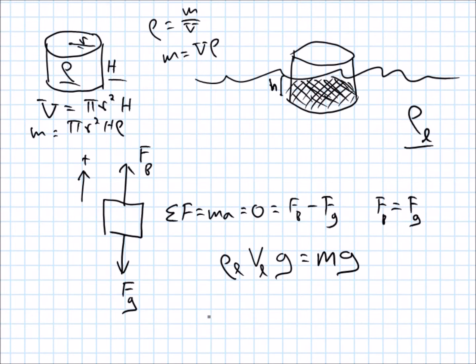So pi r squared h times the density of the object. So this is the mass of the object. Now I can put that there. So the mass of the liquid times the volume of the liquid times gravity equals pi r squared h rho g. And I can cancel these g's, g on both sides.